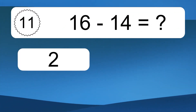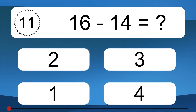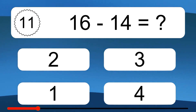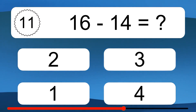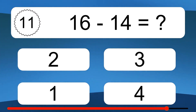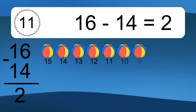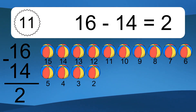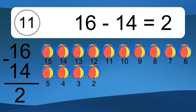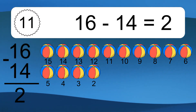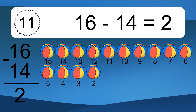16 minus 14 equals what? 16 minus 14 equals 2. Let's count it: 15, 14, 13, 12, 11, 10, 9, 8, 7, 6, 5, 4, 3, 2.